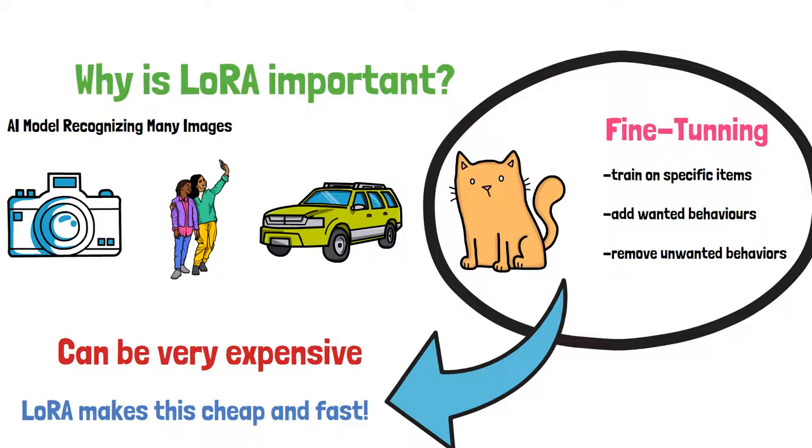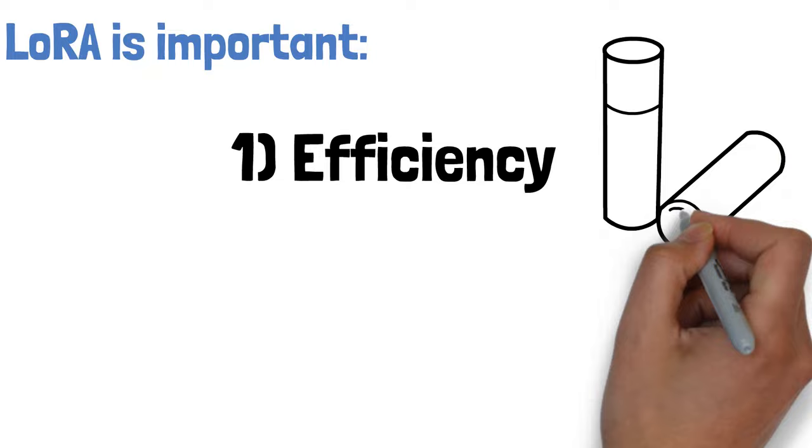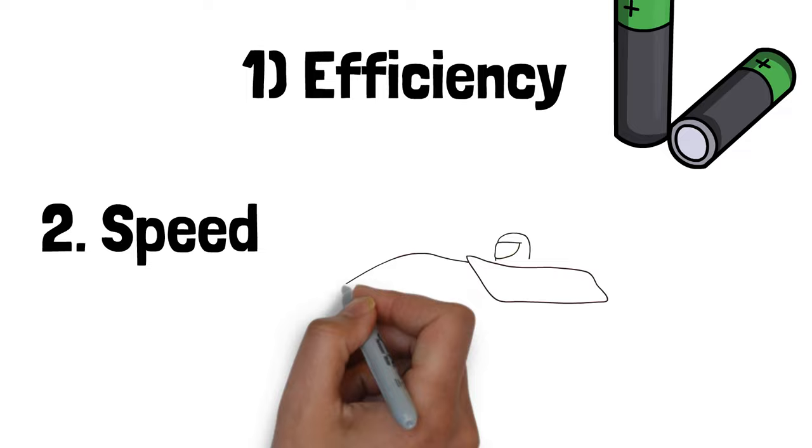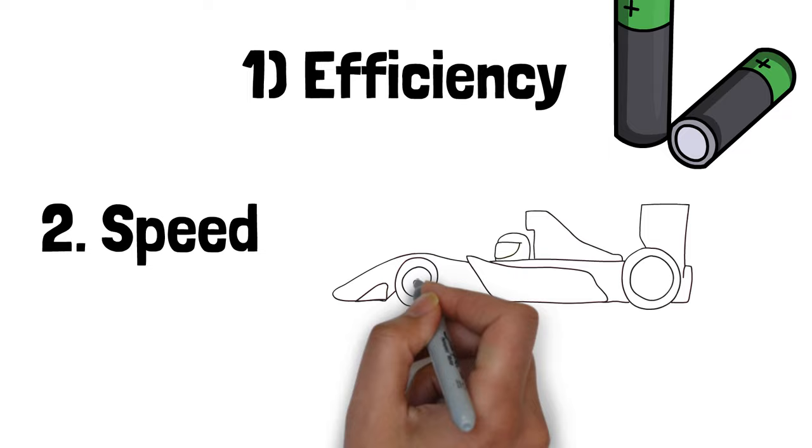LoRa is important because, one, efficiency. Using LoRa can greatly reduce the amount of resources used to train AI models to perform these tasks. Two, speed. These lower-rank models are faster to train, but also they can provide faster outputs. This can be crucial in applications where results need to happen in real time.